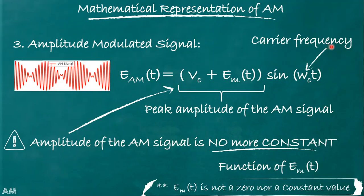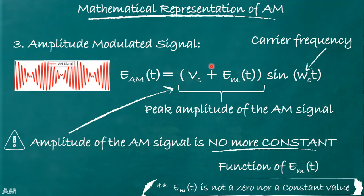The AM signal is represented as: eAM(t) = [Vc + em(t)] · sin(ωc·t), where ωc is the carrier frequency. The term inside the bracket is the peak amplitude of the AM signal. Note that the amplitude of the AM signal is no longer constant — it is a function of em(t), the message signal. Since the message signal is a function of time, the amplitude of the AM wave varies with respect to time. We consider that em(t) is neither zero nor a constant value.